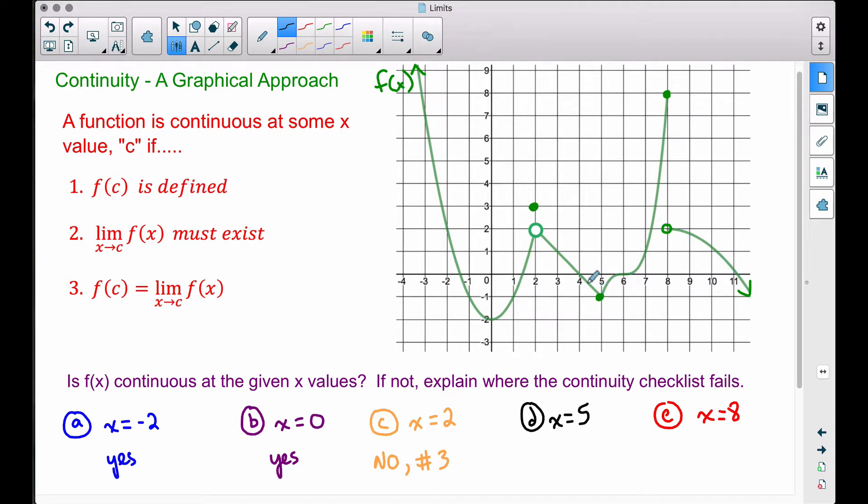But let's notice that f(5) is equal to what? f(5) is equal to negative 1. What about the limit? As we approach 5 from the left-hand side and as we approach 5 from the right-hand side,